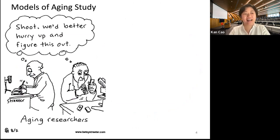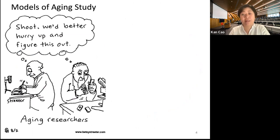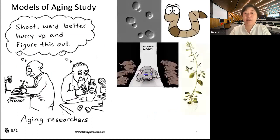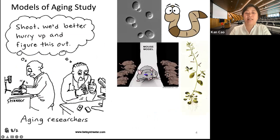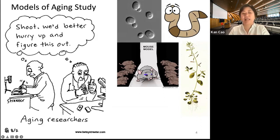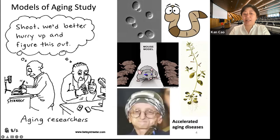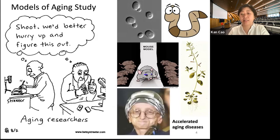How can we study those pathways? Studying human aging can be very time-consuming. That's why scientists have developed model systems. Common models include yeast, worms, and animal models like mice or even plants. But what my lab does at the University of Maryland is use a rare genetic disease called progeria.